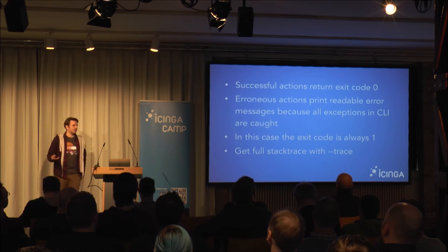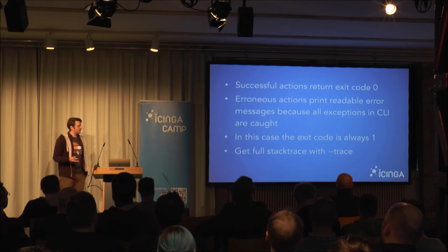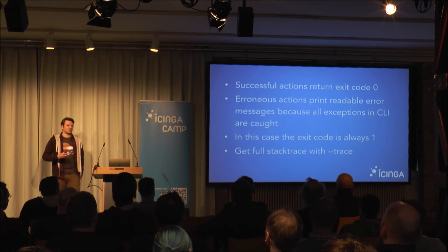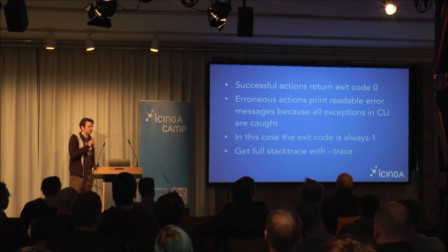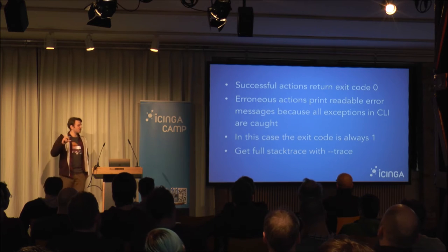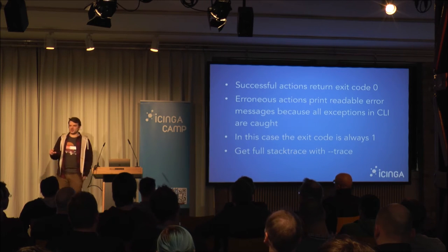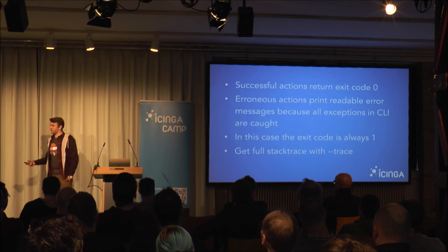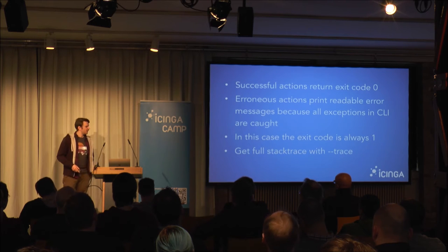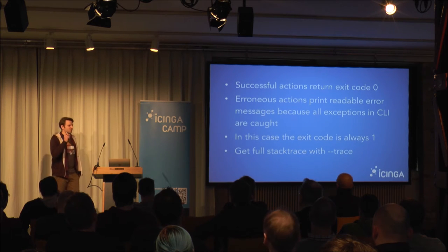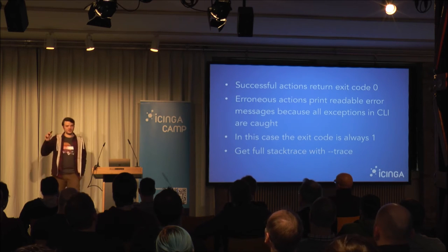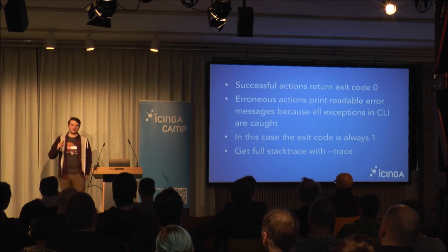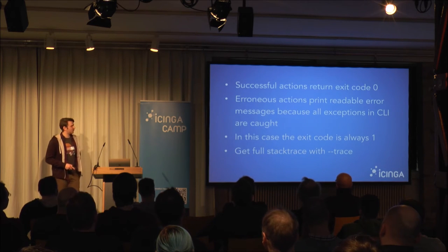Successful actions in the CLI always return exit code zero. If there's an error in your application — an exception — all exceptions are caught in the CLI and printed as a readable message on stdout. In the error case the exit code is always one. If an exception happens and you don't use the --trace option, you only get a single-line error message, but with --trace you get the full stack trace.